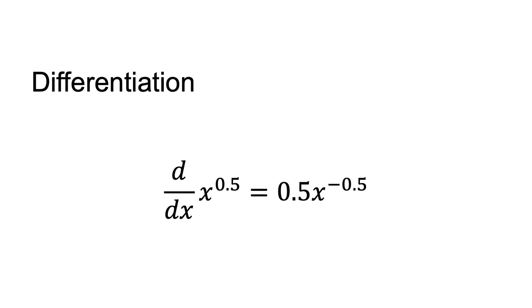As another example, d/dx x to the power of 0.5 equals 0.5 times x to the power of minus 0.5. You can see from this that for any value of x greater than zero, the derivative of x to the power of 0.5 is greater than zero, signifying that the function f(x) equals x to the power of 0.5 is greater than zero and has positive slope.